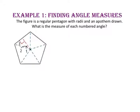Since there are 1, 2, 3, 4, 5 vertex angles, we'll take 360 degrees and divide it by 5. So the measure of angle 1 is 72 degrees.